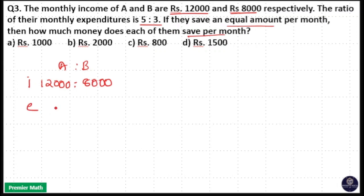And their expenditure is in the ratio 5 to 3. I will take it as 5x and 3x.